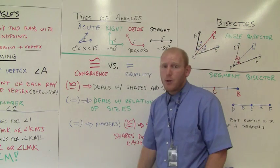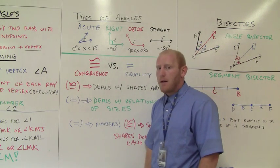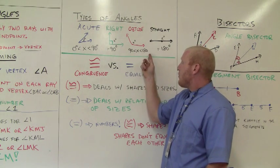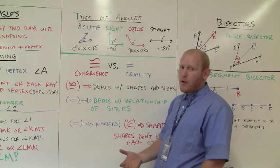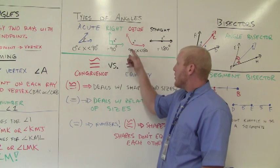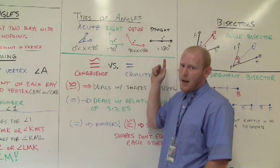Obtuse. An obtuse angle is greater than 90 but less than 180. So it's between 90 and 180. It could be 91 degrees, it could be 179 degrees. Just make sure it's greater than 90 but less than 180.